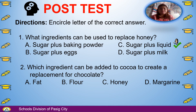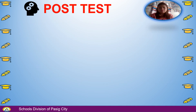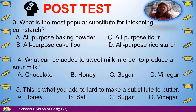Number 2: Which ingredient can be added to cocoa to create a replacement for chocolate? A. Fat, B. Flour, C. Honey, D. Margarine. The answer is A, Fat. Number 3: What is the most popular substitute for thickening cornstarch? A. All-purpose baking powder, B. All-purpose cake flour, C. All-purpose flour, D. All-purpose rice starch. The answer is C, All-purpose flour.